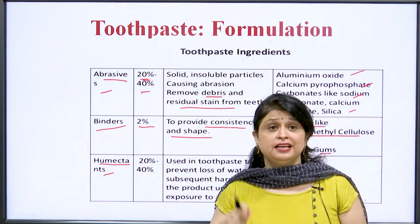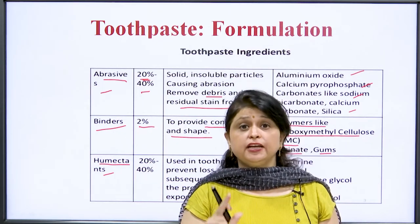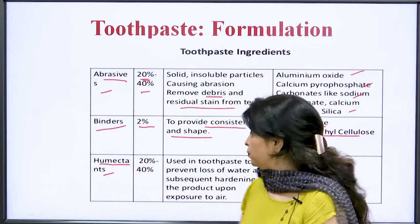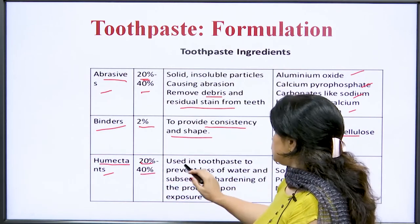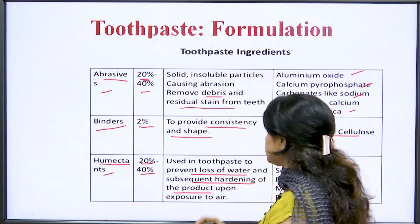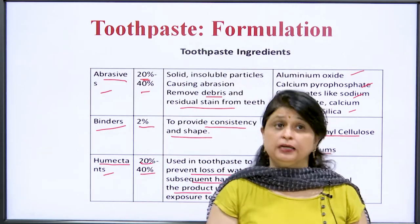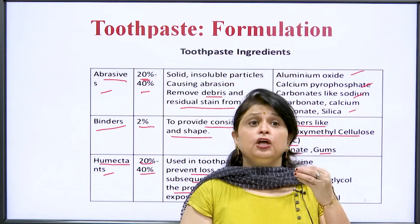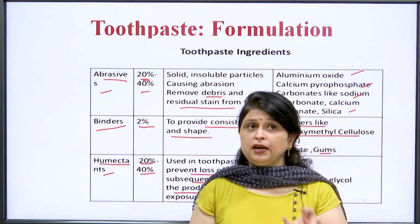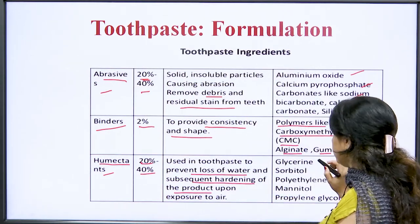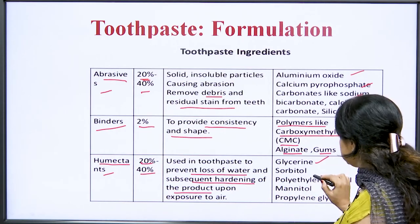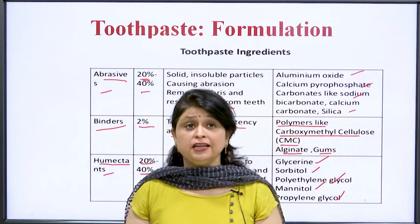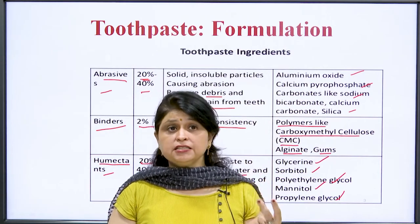Humectants are agents which absorb moisture from air. They are needed in our toothpaste formulation and are generally added at 20 to 40 percent concentration. They prevent the loss of water and subsequent hardening of our product. Since toothpaste is exposed daily to the environment, we add humectants so they absorb moisture from the air and keep our paste soft. Examples include glycerin, sorbitol, polyethylene glycol, mannitol, and propylene glycol. The three main ingredients are: abrasives, binders, and humectants.